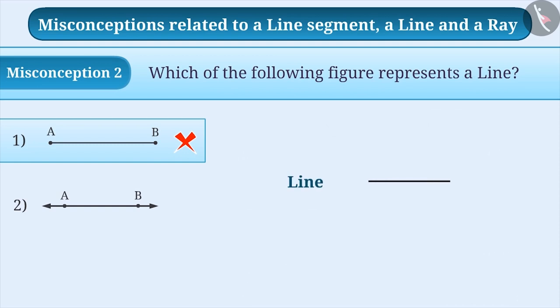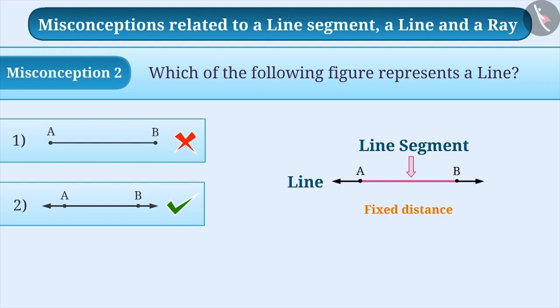A line extends to infinity on both sides. To display it, we put arrows on both sides of it. The shortest path between two points is called a line segment. Therefore, the fixed distance of a line segment is expressed by putting dots on both ends.